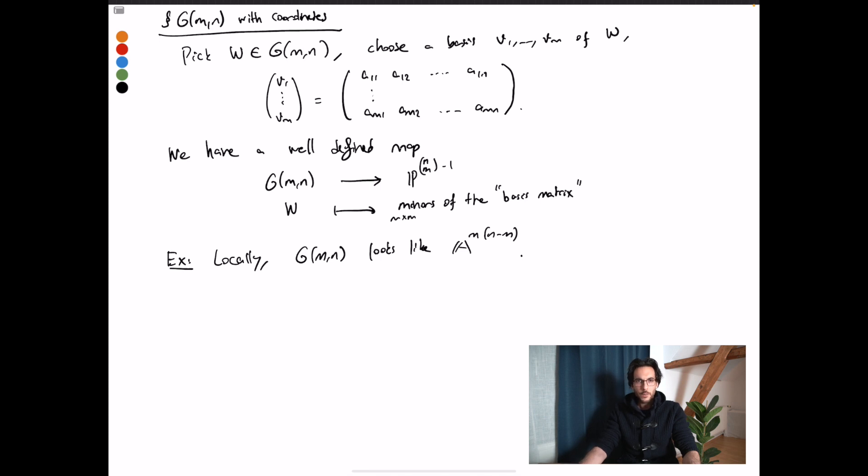All the remaining coordinates, and there are m times n minus m coordinates now in this basis matrix, they are completely free to vary, giving me m-dimensional subspaces in V. Therefore, the Grassmannian locally looks like an affine space of this dimension.